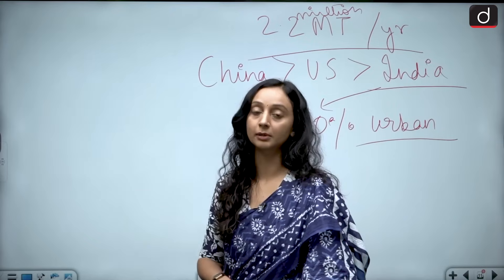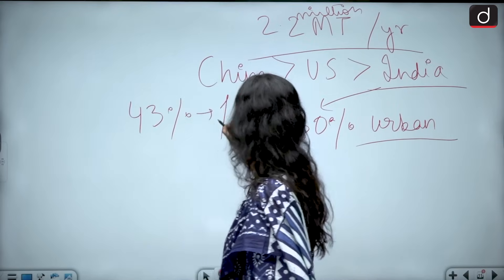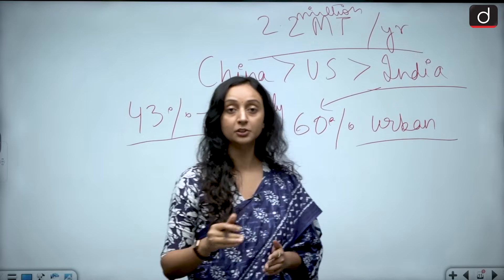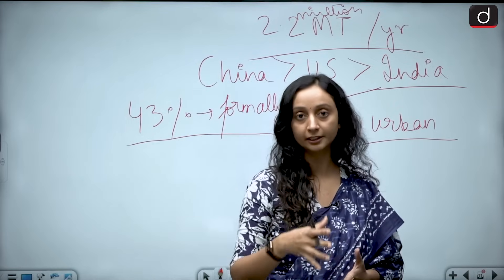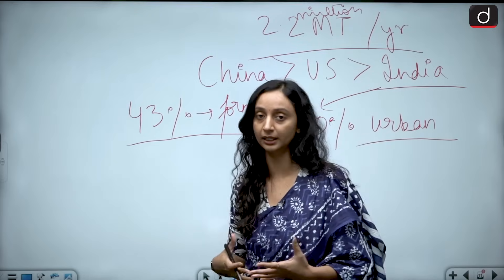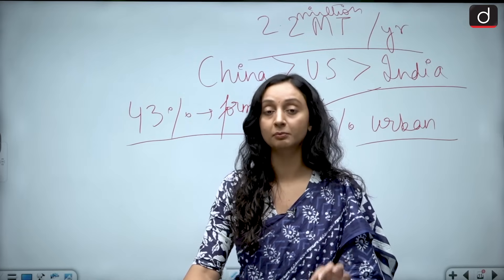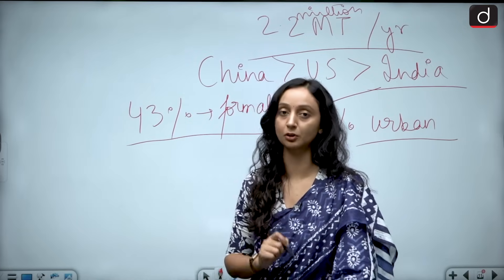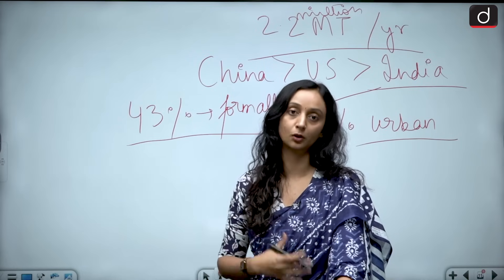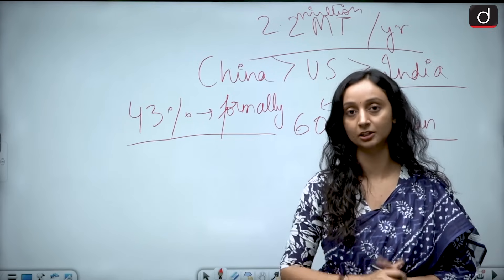Out of these 2.2 million metric tons, only 43% is being treated formally — less than half. This means majority is either being treated informally or not being treated at all — informally and unscientifically, which is not up to the mark. This is a matter of grave concern because we are the third largest producer of e-waste in the world and we do not have scientific ways of dealing with the disposal of this e-waste.